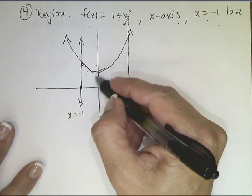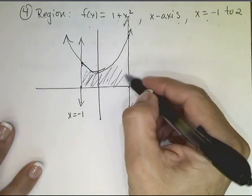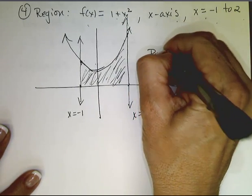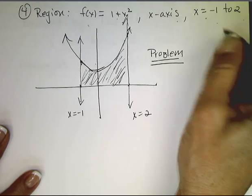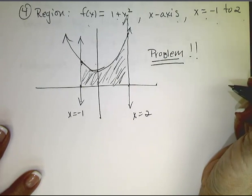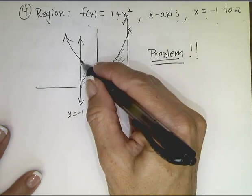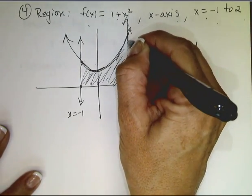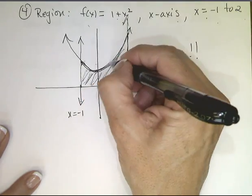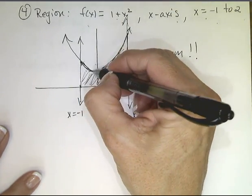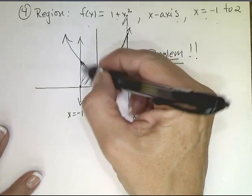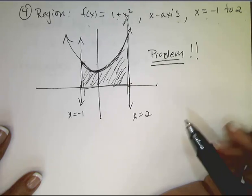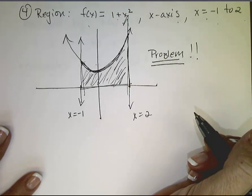And what I care about is finding the area of this region right here. And this is where what we have done so far has perhaps failed us. This is not a nice figure in plain geometry where we have an easy formula. It's not a rectangle. It's not a triangle. It's not a circle, a half circle.